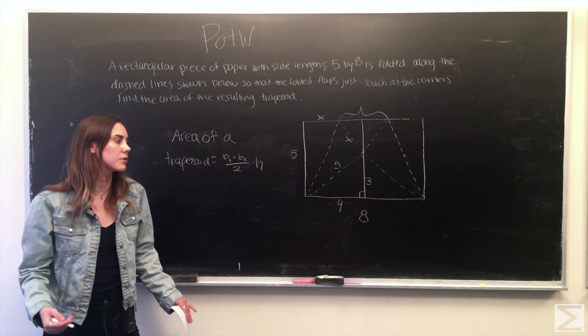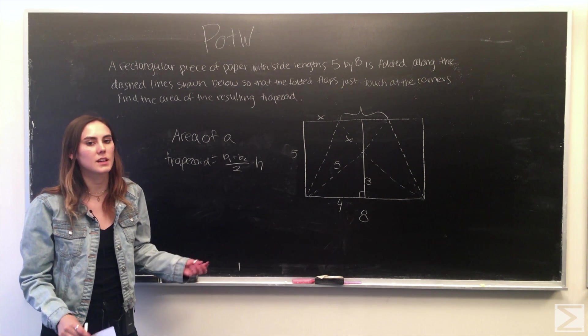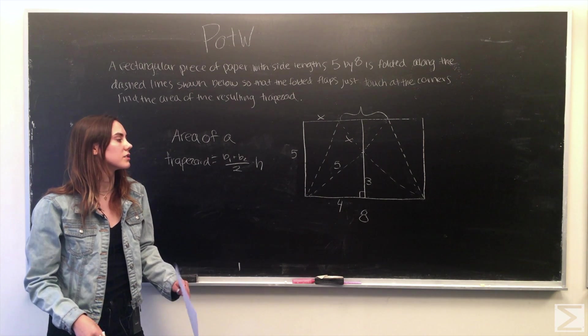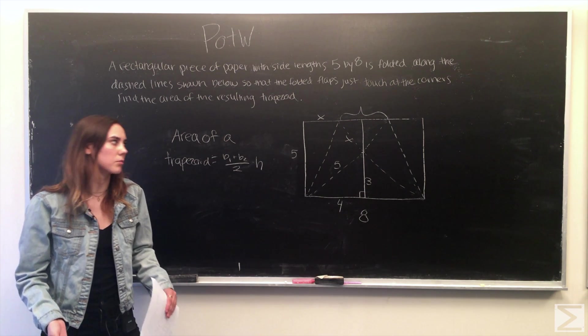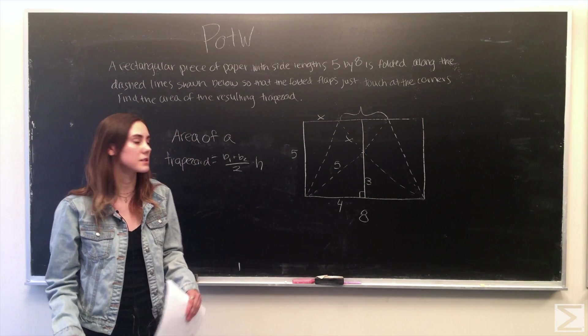We can do a similar thing where we bisect it into two triangles that make up that area and using the new variable X we can use the Pythagorean theorem to solve for what the base is equal to.